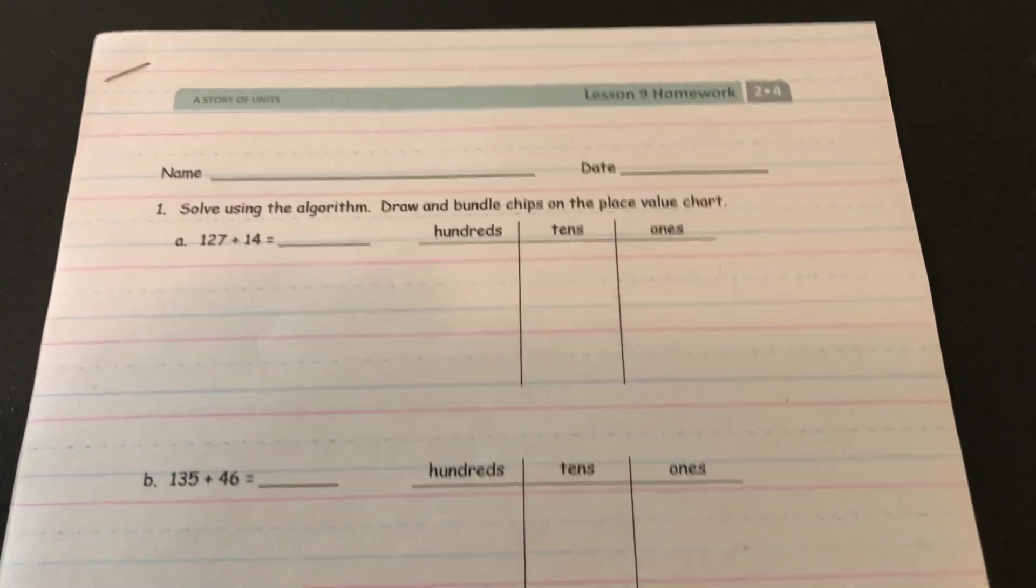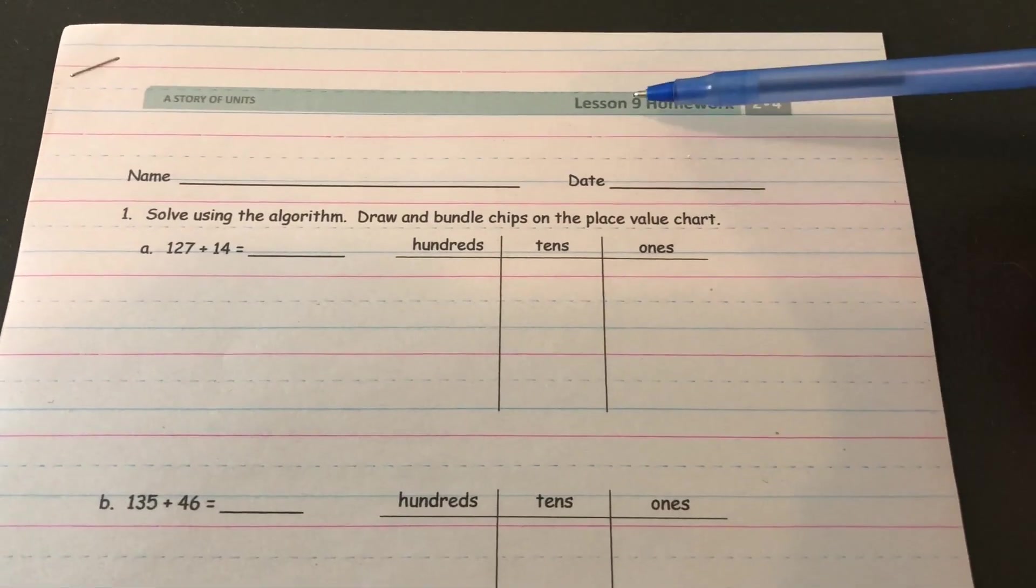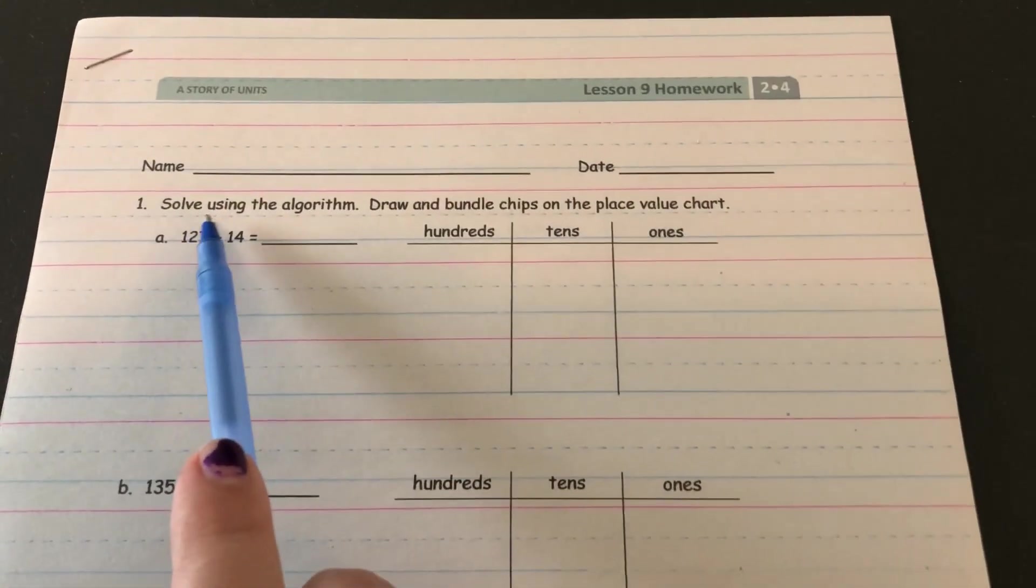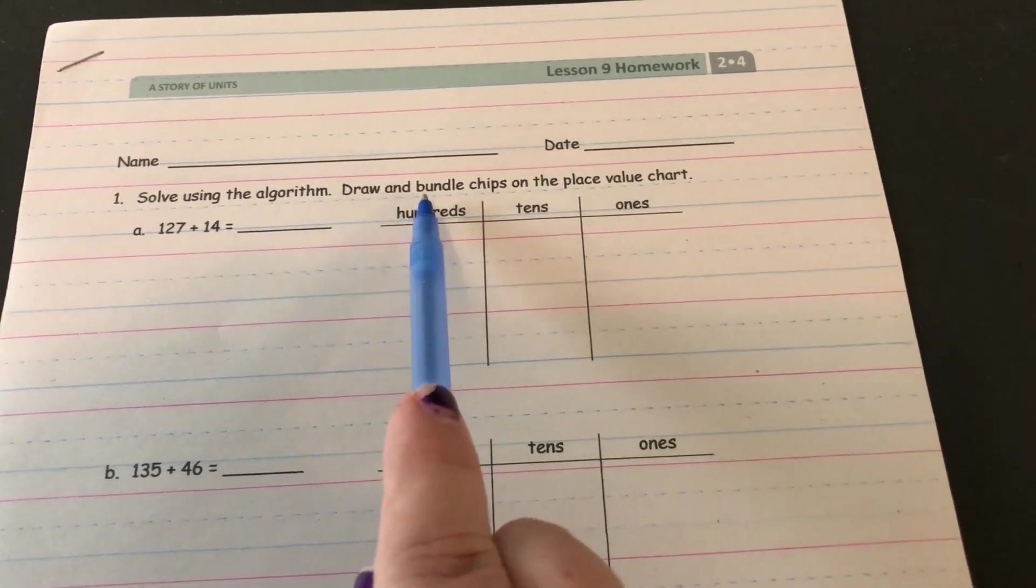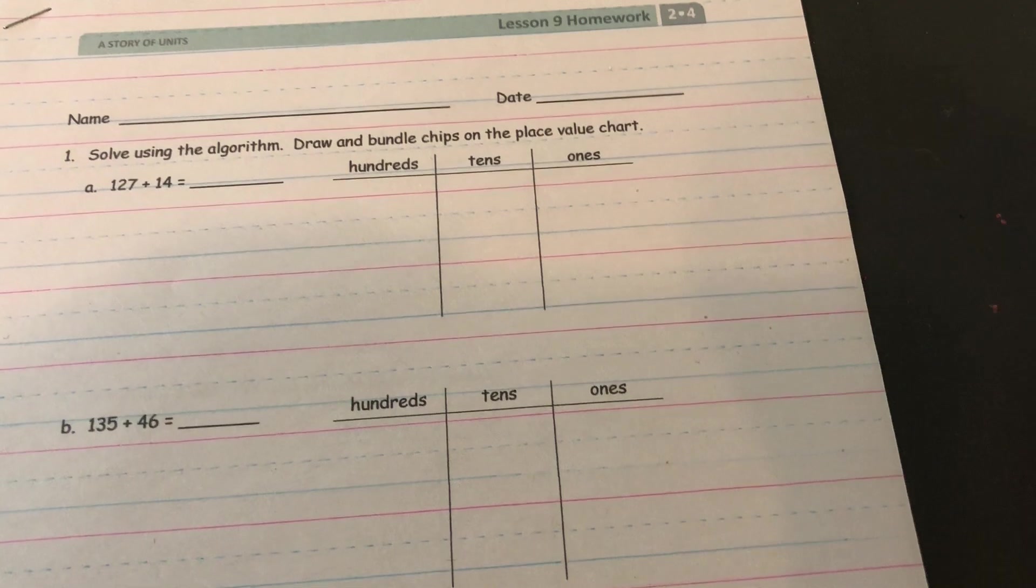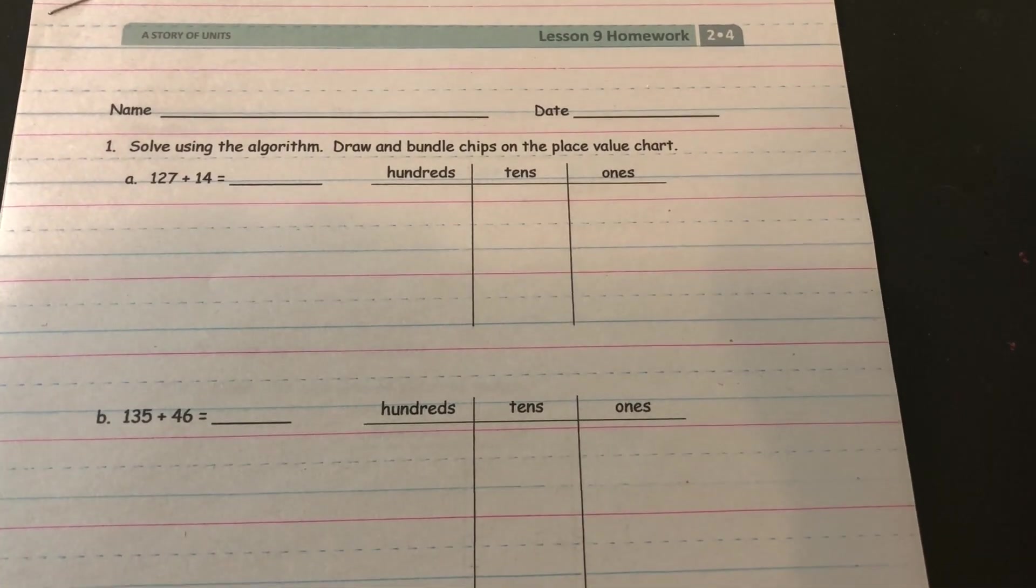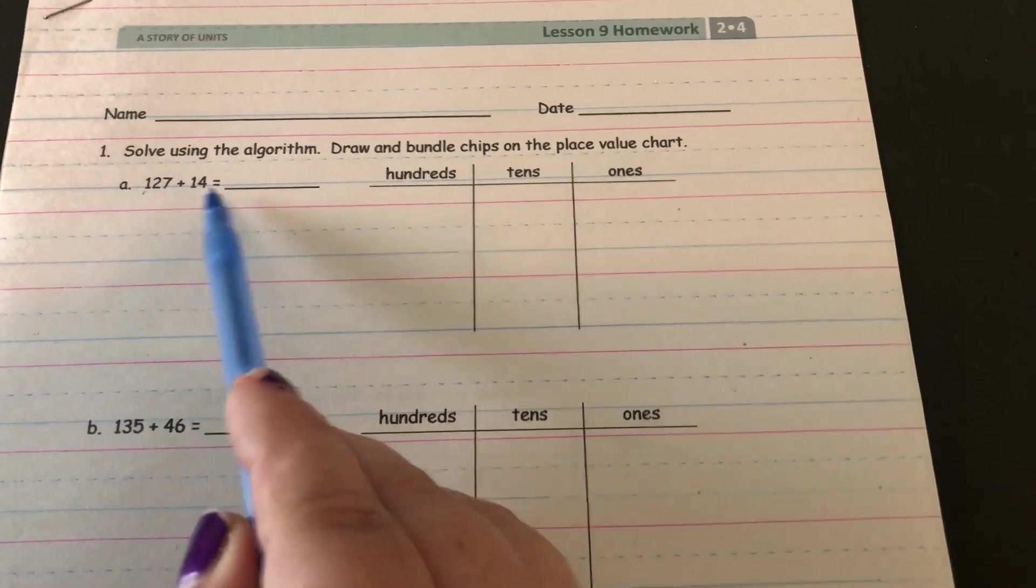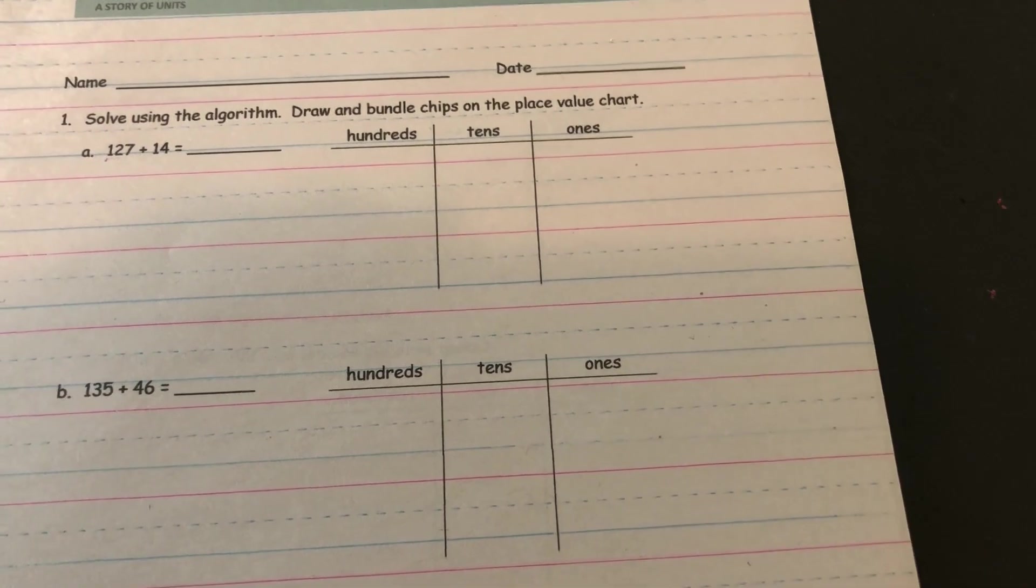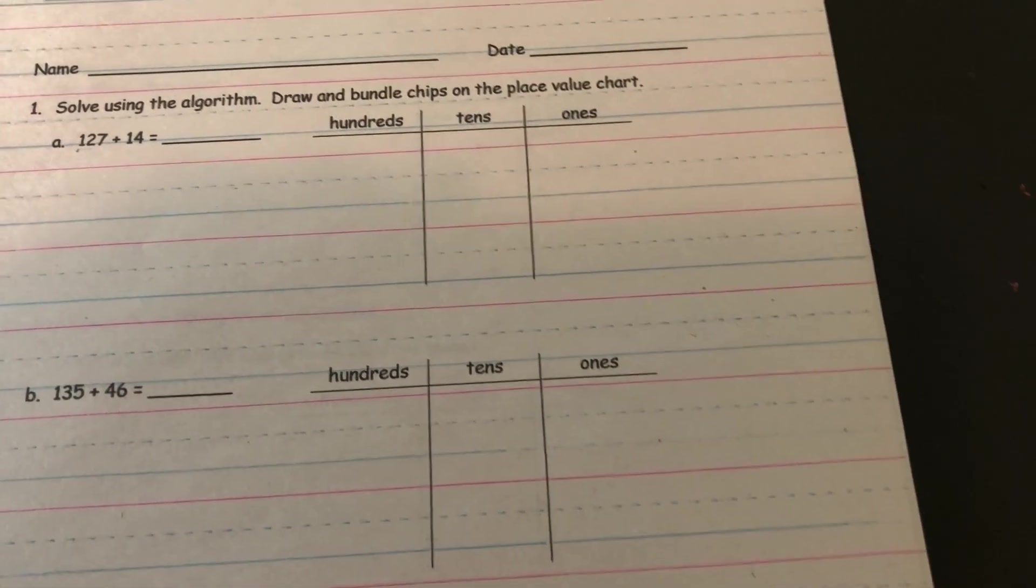Hey boys and girls, today we're looking at the homework from module 4 lesson 9, and it starts off by saying solve using the algorithm, draw and bundle chips in the place value chart. So very similar to what you did yesterday for homework, only this time we're going to be adding a three-digit number to a two-digit number. So it's extra important that you line your numbers up correctly since there's not the same amount of digits in each number.